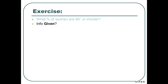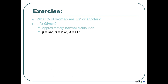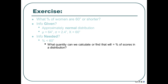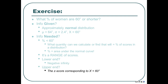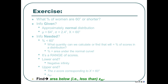What percentage of women are 60 inches or shorter? The distribution is approximately normal. The mean is 64 inches and the standard deviation is 2.4. You need to find what percentage of women are less than 60 inches tall — that means a line at 60 inches and the area going down to the very left. Get in the habit of drawing diagrams: a normal curve, label the mean, mark the value that divides the distribution, put it on the correct side of the mean, and shade the area you're trying to find.